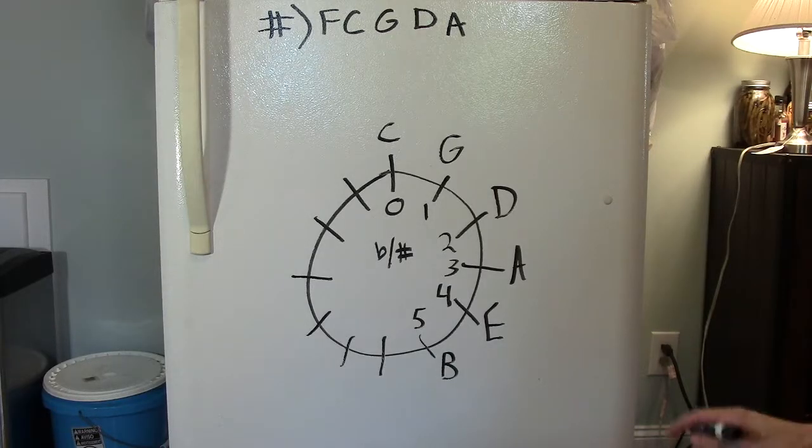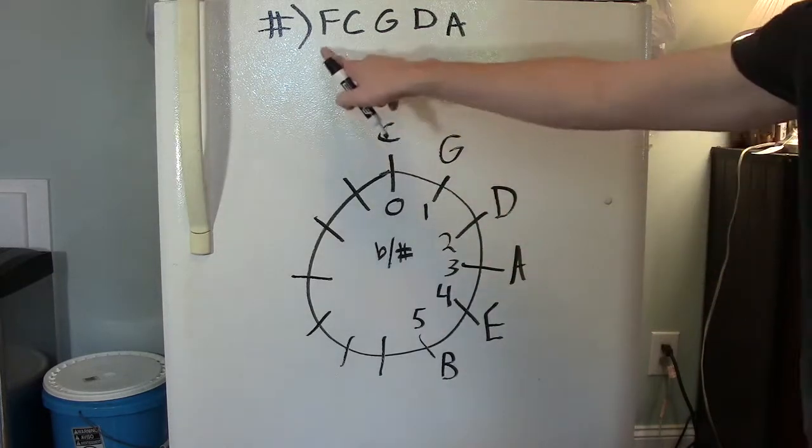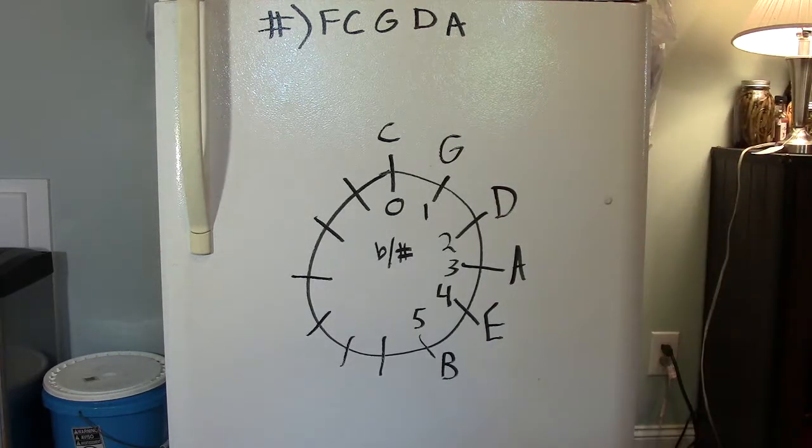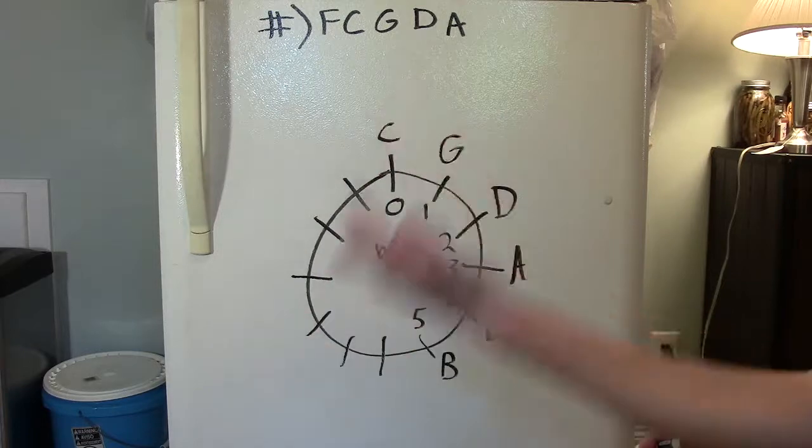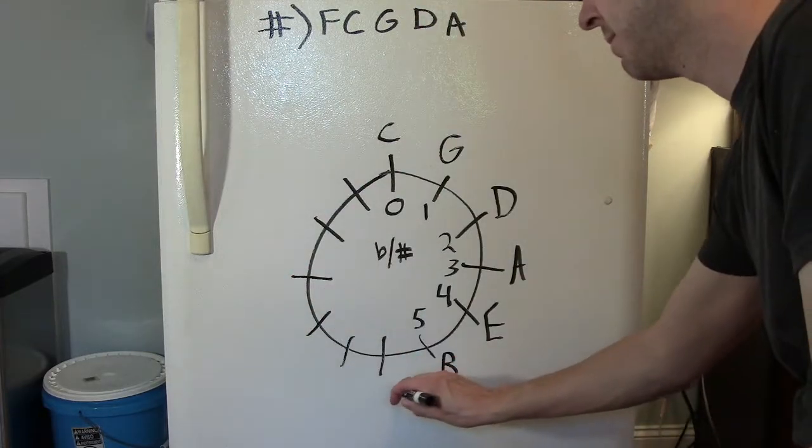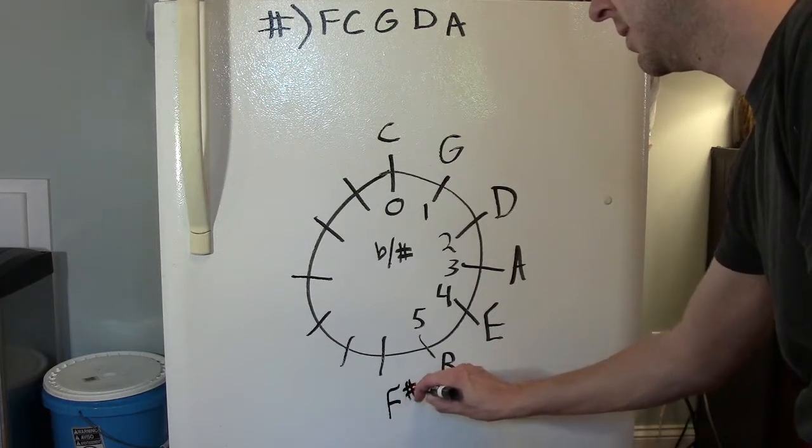Now we need to go up another perfect fifth from the note B, but it's important to remember that B major has F, C, G, D, and A sharp in it. B, C sharp, D sharp, E, F sharp. I can't stress how important that sharp sign is. It is not the key of F major. It's the key of F sharp major.